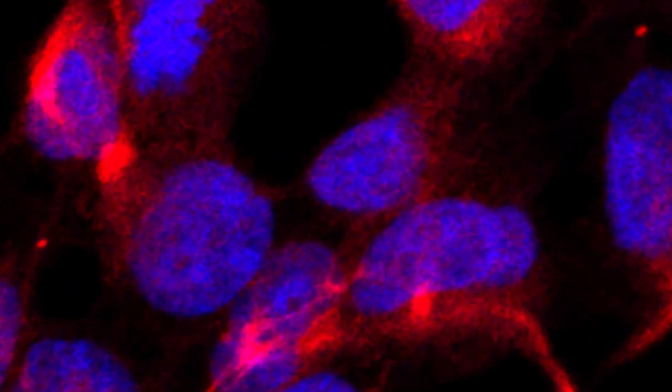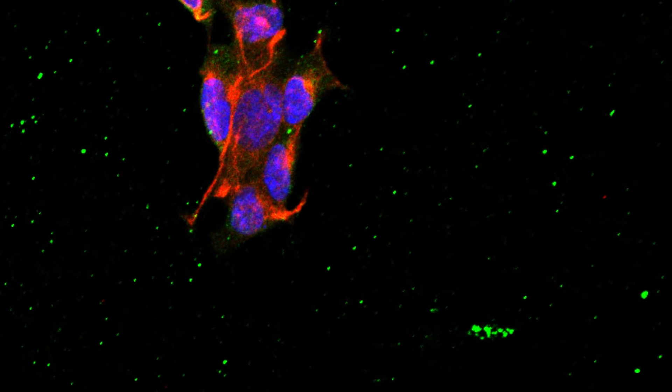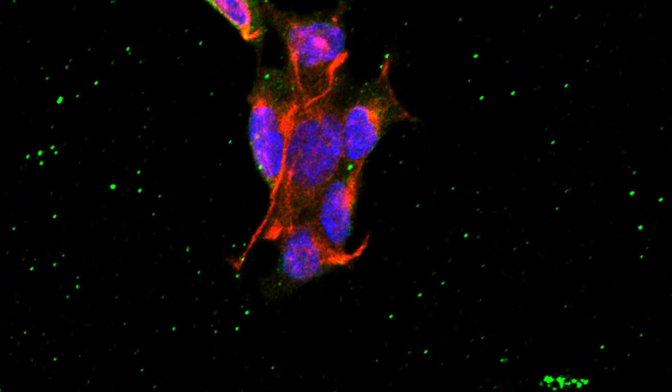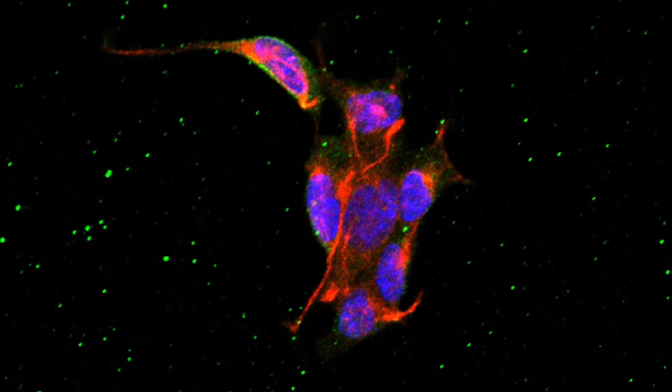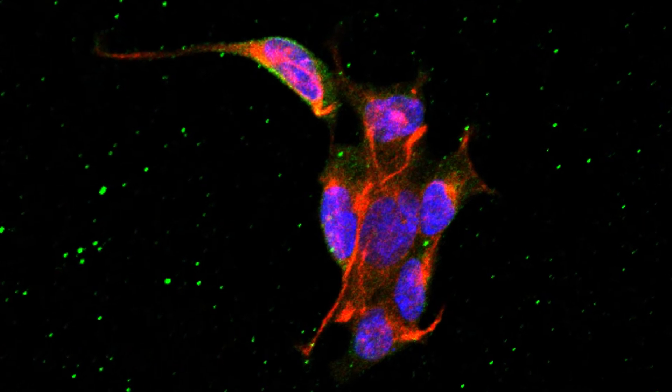Before the confocal we used another type of microscope that would only allow us to look at it from one plane, from one field of view. But with the confocal we're able to look at it in 3D and take a Z-stack image, which means we can go through the cell in different slices.